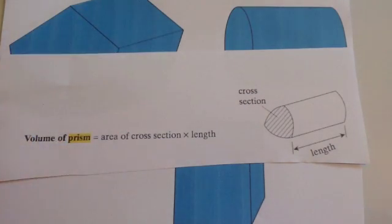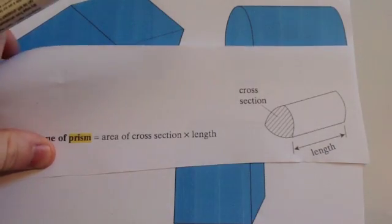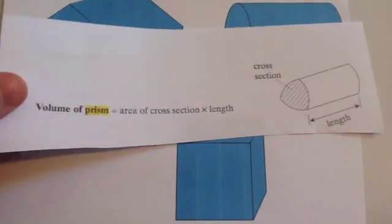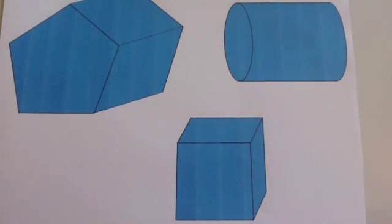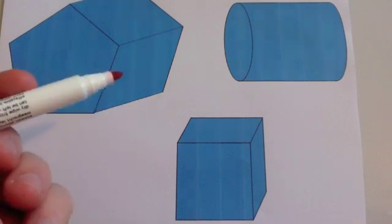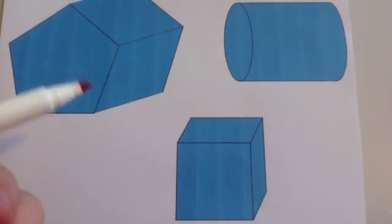This is given to you in the formula sheet for GCSE foundation and higher, but it's something you should know anyway. You've probably already worked out some volumes of prisms before. For instance, if you had a cuboid, you'd do length times width times height. By doing length times width, you get the area of the cross section.